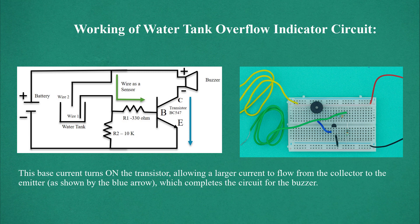This base current turns on the transistor, allowing a larger current to flow from the collector to the emitter as shown by the blue arrow, which completes the circuit for the buzzer.